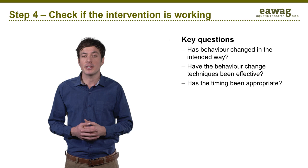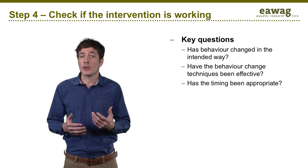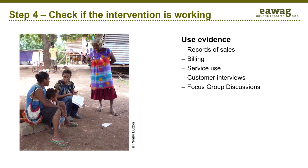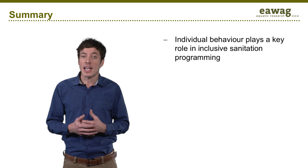Finally, check if the behavior change program is working and the target behaviors have been adopted. To produce findings, use a variety of sources. For example, if the goal is to regularly have residents' pits emptied by an official provider, use evidence from pit-emptying records and personal feedback from residents. To find out what techniques worked and why, carry out interviews or conduct focus group discussions with the target population. Also, check for any unintended outcomes — positive as well as negative — and, if necessary, adjust the intervention.